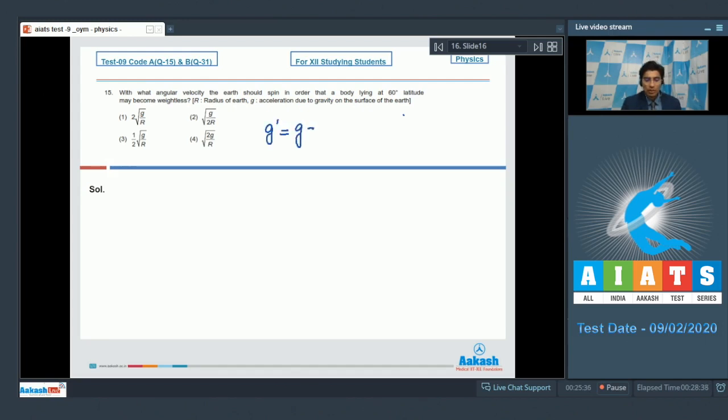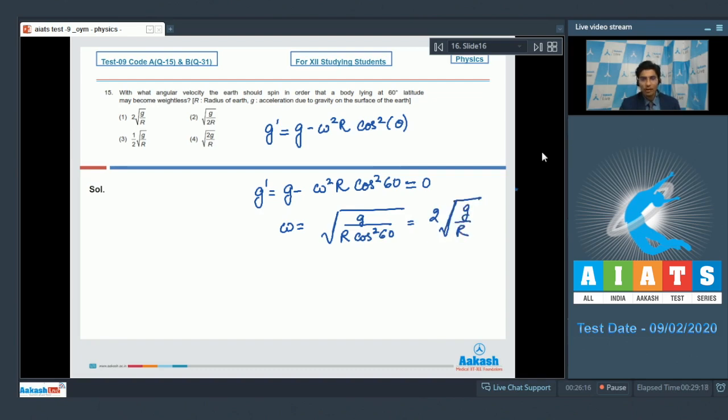The apparent acceleration due to gravity, G dash is equal to G minus omega square R cos square theta, with theta as the latitude angle. Here latitude is given to be 60 degrees. Therefore, G dash will be equal to G minus omega square R cos square 60. For a body to feel weightlessness, G dash should be equal to 0, which means that omega should be equal to under root of G divided by R cos square 60, which will be equal to 2 under root G by R. And hence, option number 1 is the correct answer.